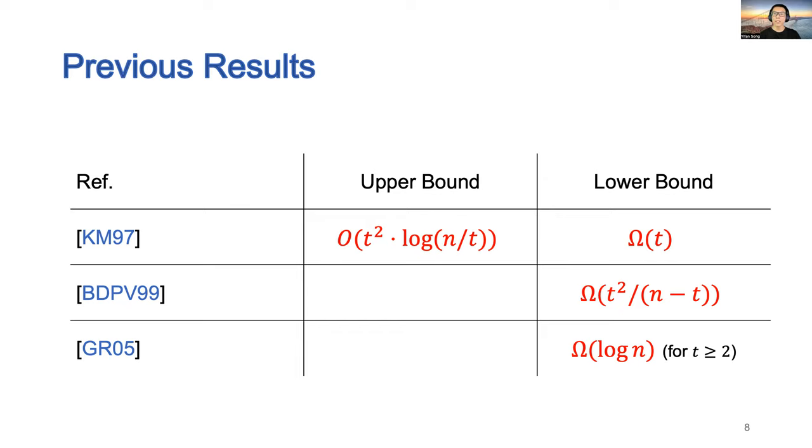On the other hand, they also gave a lower bound of Ω(t) random bits. In BDPV99, the authors obtained a lower bound of Ω(t²/(n-t)) random bits. Then, in GR05, the authors showed a lower bound of Ω(log n) random bits for t that is at least 2.